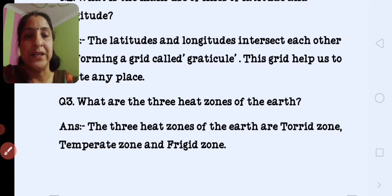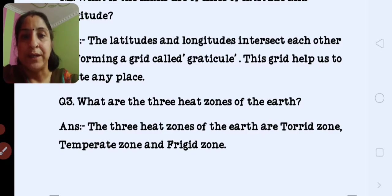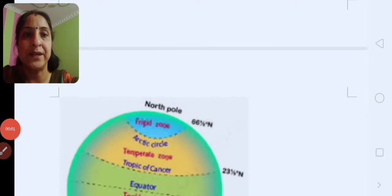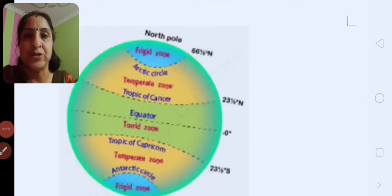Next, what are the three heat zones? Torrid zone, temperate zone and the frigid zone. These are the three heat zones of the earth. Here is the diagram of the three heat zones of the earth.